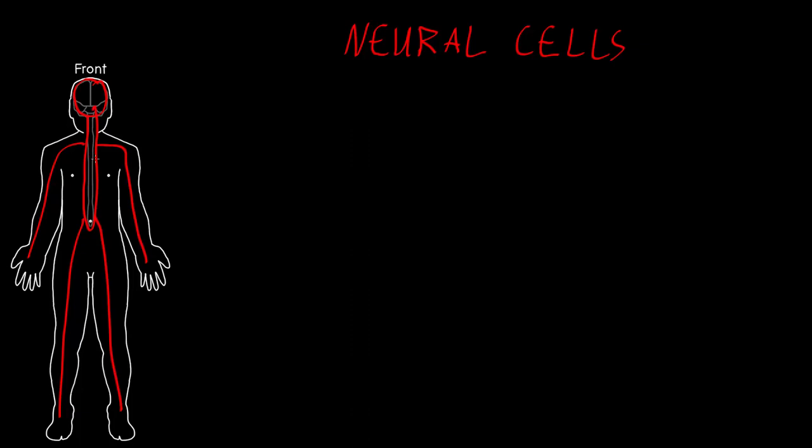And the cells that make up the nervous system are called neural cells. And these cells allow the nervous system to do all the functions that it performs, which are really involved in almost every function of the body, physical as well as mental.